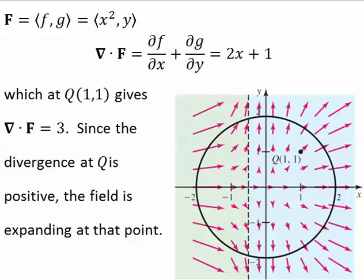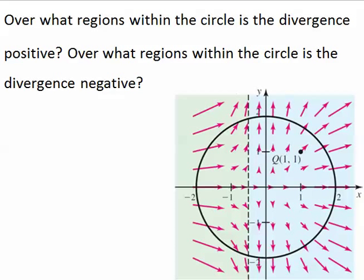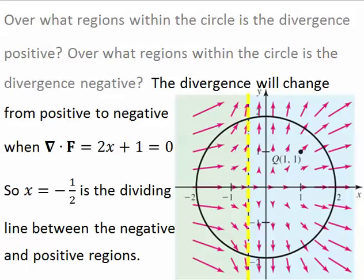Since the divergence at q is positive, the field is expanding at that point, as we predicted. Over what regions within the circle is the divergence positive? Over what regions within the circle is the divergence negative? Well, the divergence will change from positive to negative when the divergence equals 0. And the divergence equals 0 when x equals negative 1 half. So the line x equals negative 1 half is the dividing line between the negative and positive regions.